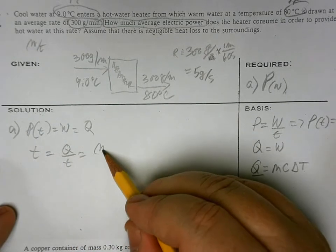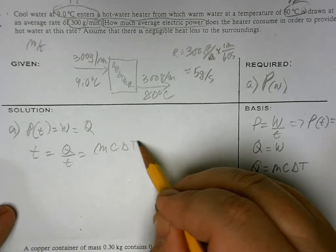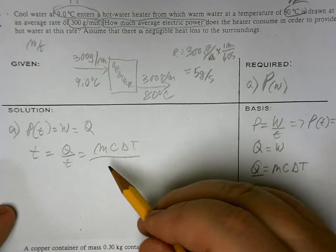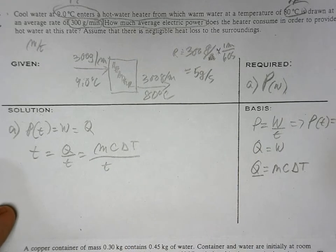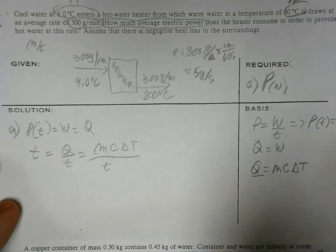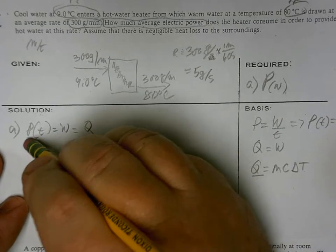Which is Q over T, and this is MC delta T over time. This time we're not looking for, oh sorry, we're looking for power.